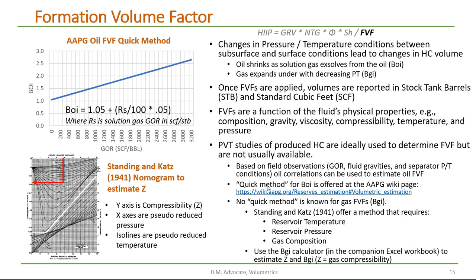AAPG's wiki page offers a quick method for determining B sub O sub I based on GOR, and they offer a specific equation. Usually, B sub O is a number between 1 and 2, and can become higher as we get into volatile oils.